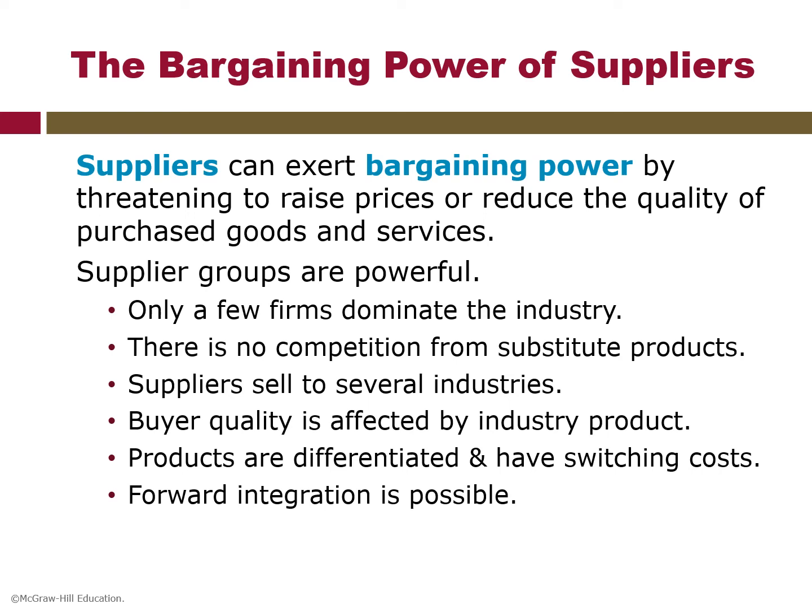The power of even large, powerful suppliers can be checked if they compete with substitutes. When the industry is not an important customer of the supplier group — when suppliers sell to several industries and a particular industry does not represent a significant fraction of its sales — suppliers are more prone to exert power. When the supplier's product is an important input to the buyer's business and is critical to the buyer's manufacturing process or product quality, then the bargaining power of suppliers is high. The supplier group also poses a threat of forward integration, which provides a check against the industry's ability to improve the terms by which it purchases.